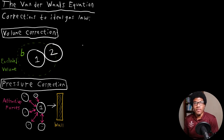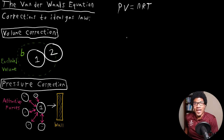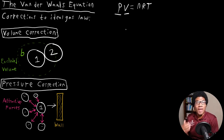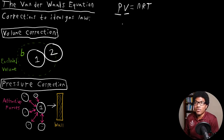In this video, we're going to be discussing the Van der Waals equation. This equation is the first real gas equation that we're going to look at in detail. The best way to think about the Van der Waals equation is as corrections to the ideal gas law. We're familiar with our ideal gas law, PV equals nRT, and the Van der Waals equation represents a series of two corrections to the ideal gas pressure and volume specifically.